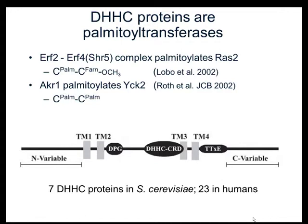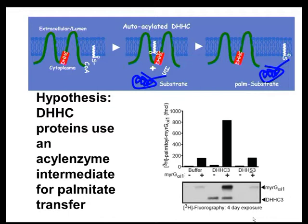My laboratory has been very interested in the mechanism of DHHC proteins. It was known that DHHC proteins become palmitoylated during the reaction as well as their substrate. When we incubated DHHC3, a human DHHC protein, with myristoylated Gα-i, we could see incorporation of palmitate into the enzyme in the presence or absence of substrate, as well as into the substrate. Using the catalytically inactive DHHS mutant — where the key cysteine residue was changed to serine — blocked both auto-acylation and substrate palmitoylation, leading to the hypothesis that DHHC proteins use an acyl-enzyme intermediate.